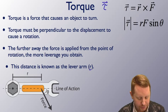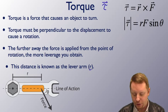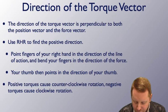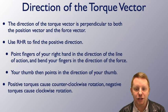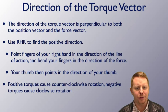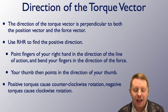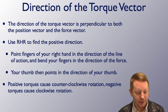Torque is a force that causes an object to turn. The direction of the torque vector is perpendicular to both the position vector and the force vector, one of those counterintuitive things. We're going to use the right hand rule to find the positive direction.